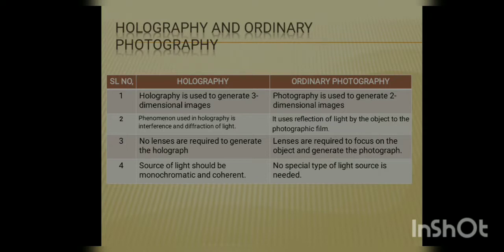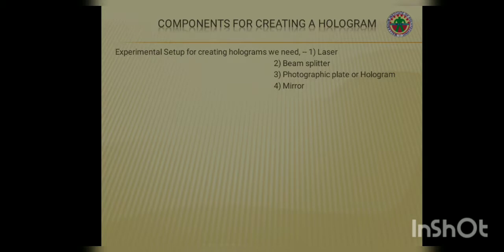What are the differences between holography and ordinary photography? Holography is used to generate three-dimensional images, whereas photography is used to generate two-dimensional images. The phenomenon used in holography is interference and diffraction of light, whereas ordinary photography uses reflection of light by the object onto the photographic film. No lenses are required to generate a hologram, whereas lenses are used to focus on the object and generate the photograph. In holography, the source of light should be monochromatic and coherent; in ordinary photography, no special type of light source is needed.